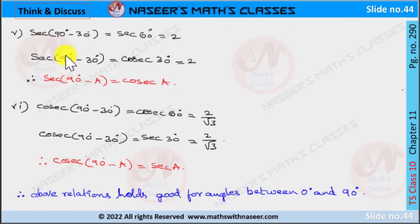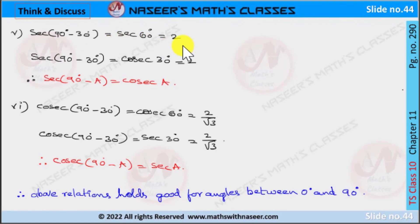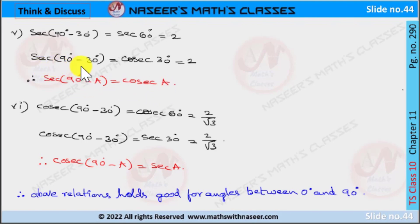For the fifth relation, sec(90° - a) = cosec(a): if a = 30°, then sec(90° - 30°) = sec(60°). We already know sec(60°) = 2. By complementary angles, sec(90° - a) = cosec(a), so sec(90° - 30°) = cosec(30°). We already know cosec(30°) = 2.